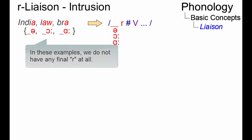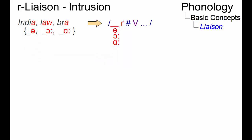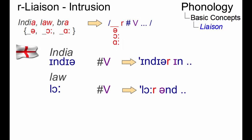Here, the phoneme R is inserted between two vowels even if it is not represented orthographically. The condition is: the final vowel of the first item must be a low back or a central vowel, and the next word must start with a vowel. So in RP we get 'law and order' and so on.